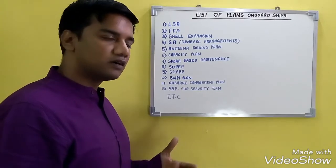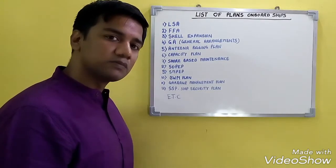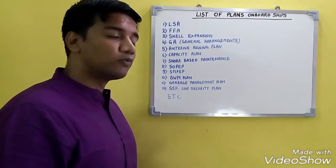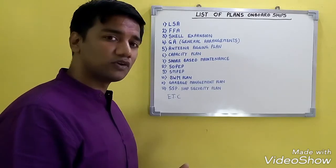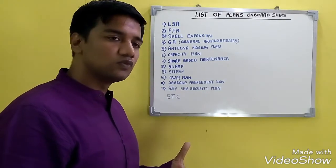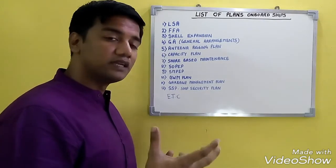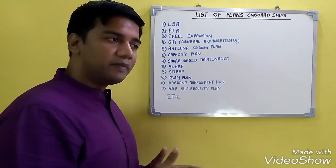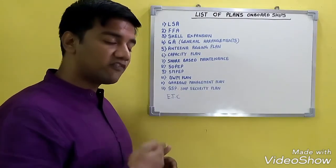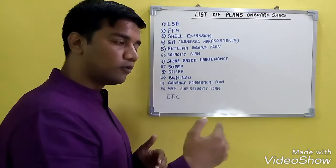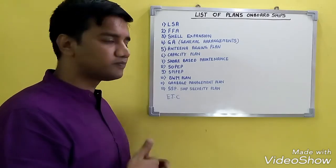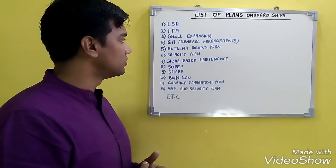The firefighting appliance plan provides information regarding all firefighting appliances present on board, including fixed firefighting appliances and portable firefighting appliances. The shell expansion plan presents the numbering and naming of your shell plating. The naming is done outwards from the keel, and the numbering is done from the aft perpendicular positively in the forward direction, and numbered negatively from the aft perpendicular in the aft direction.